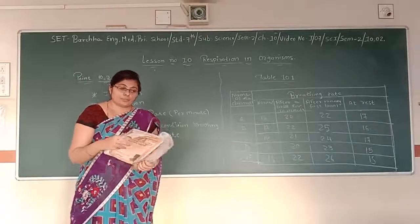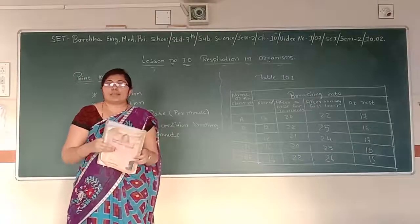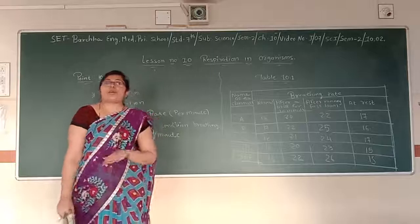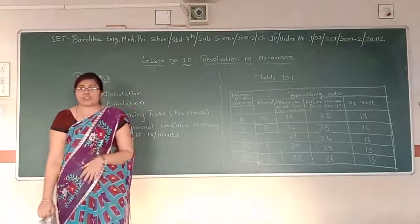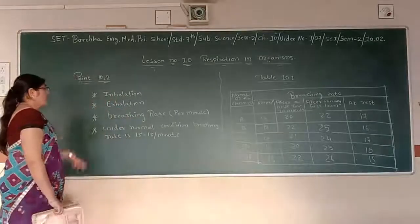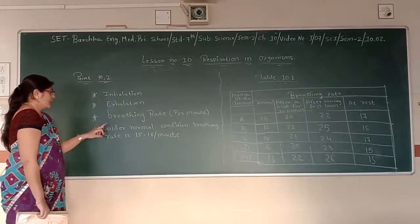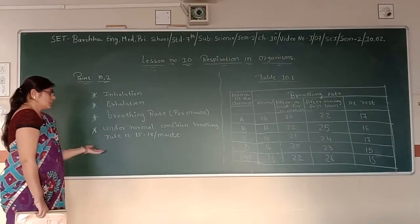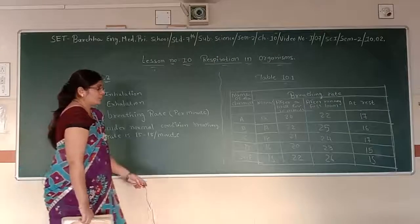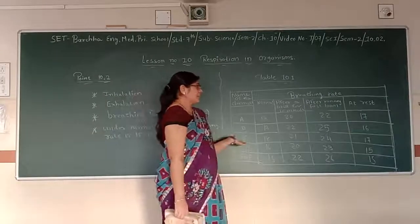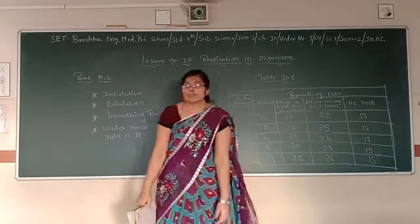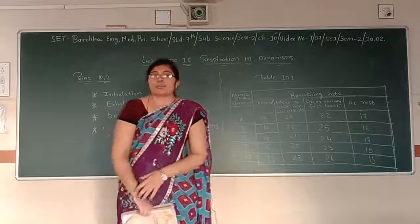So, when you perform an activity, your breathing rate is increasing and decreasing according to the need of oxygen. What do you learn from this point? You learn from this point that what is inhalation, exhalation, breathing rate. Under normal condition, the breathing rate is 15 to 18 minutes. Even we tabulate some activities and we understand the concept of breathing. Here, the 10.2 is over.